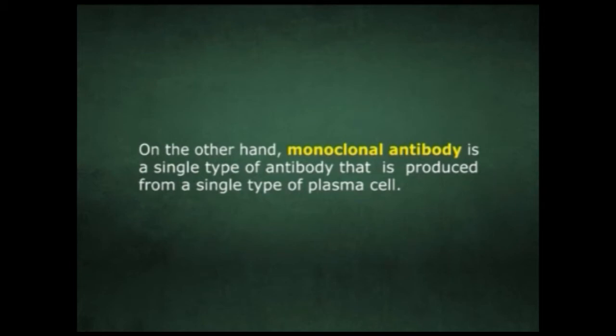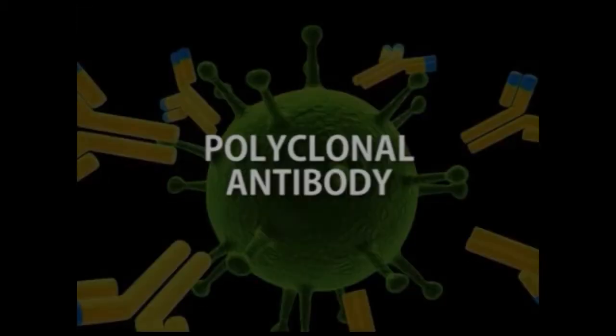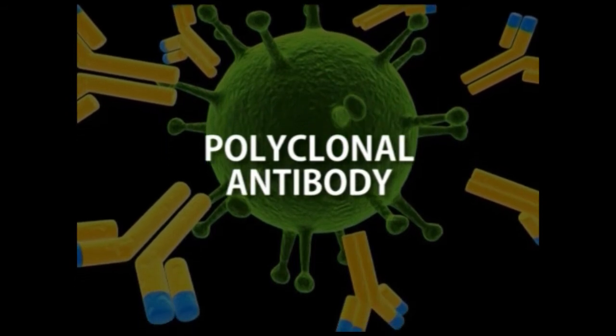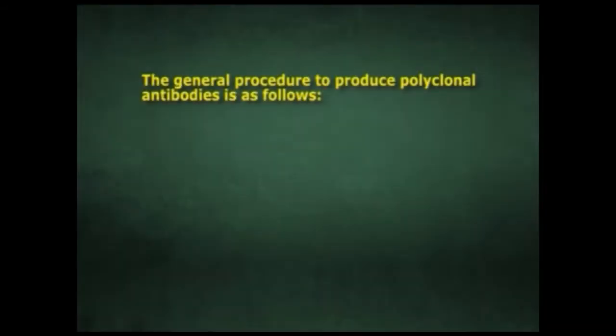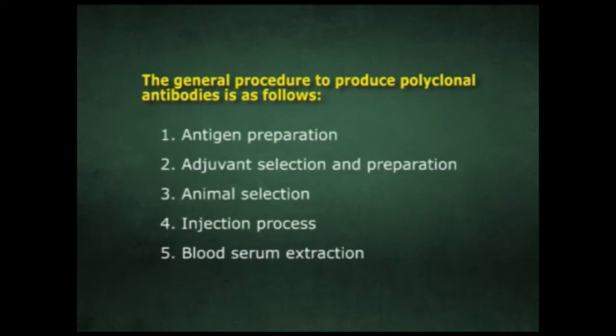Coming to polyclonal antibody production, the first step is to immunize a mouse, rabbit, or goat with antigen to produce antibody against that antigen. The polyclonal antibody produced is then drawn from the blood of the animal. The general procedure includes: first, antigen preparation; second, adjuvant and antigen selection and preparation; third, animal selection; fourth, the injection process; and fifth, blood serum extraction.